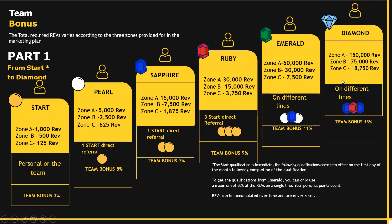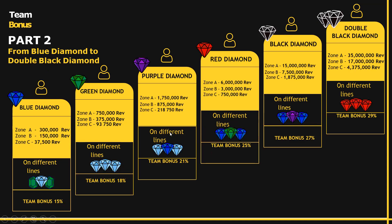Here you can identify the conditions. For Emerald, on top of all the other conditions, you need one pearl, a second pearl, and then a Sapphire. For the diamond qualification, you need two Sapphires and a Ruby under your personally sponsored team. For blue diamond, you need two diamonds and one blue diamond in your team that you've personally sponsored, along with the required REV amounts, to get 21% as team bonus.